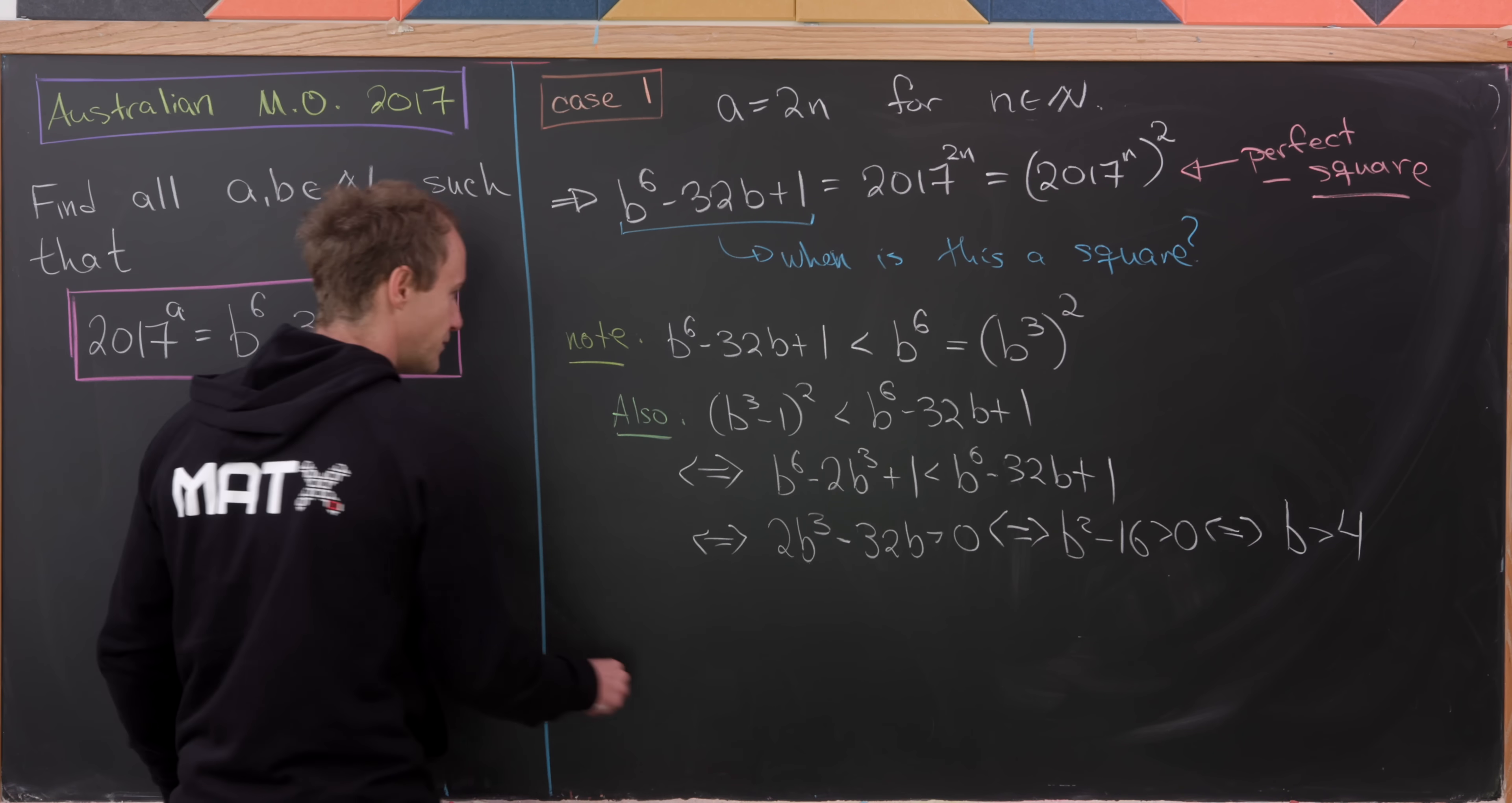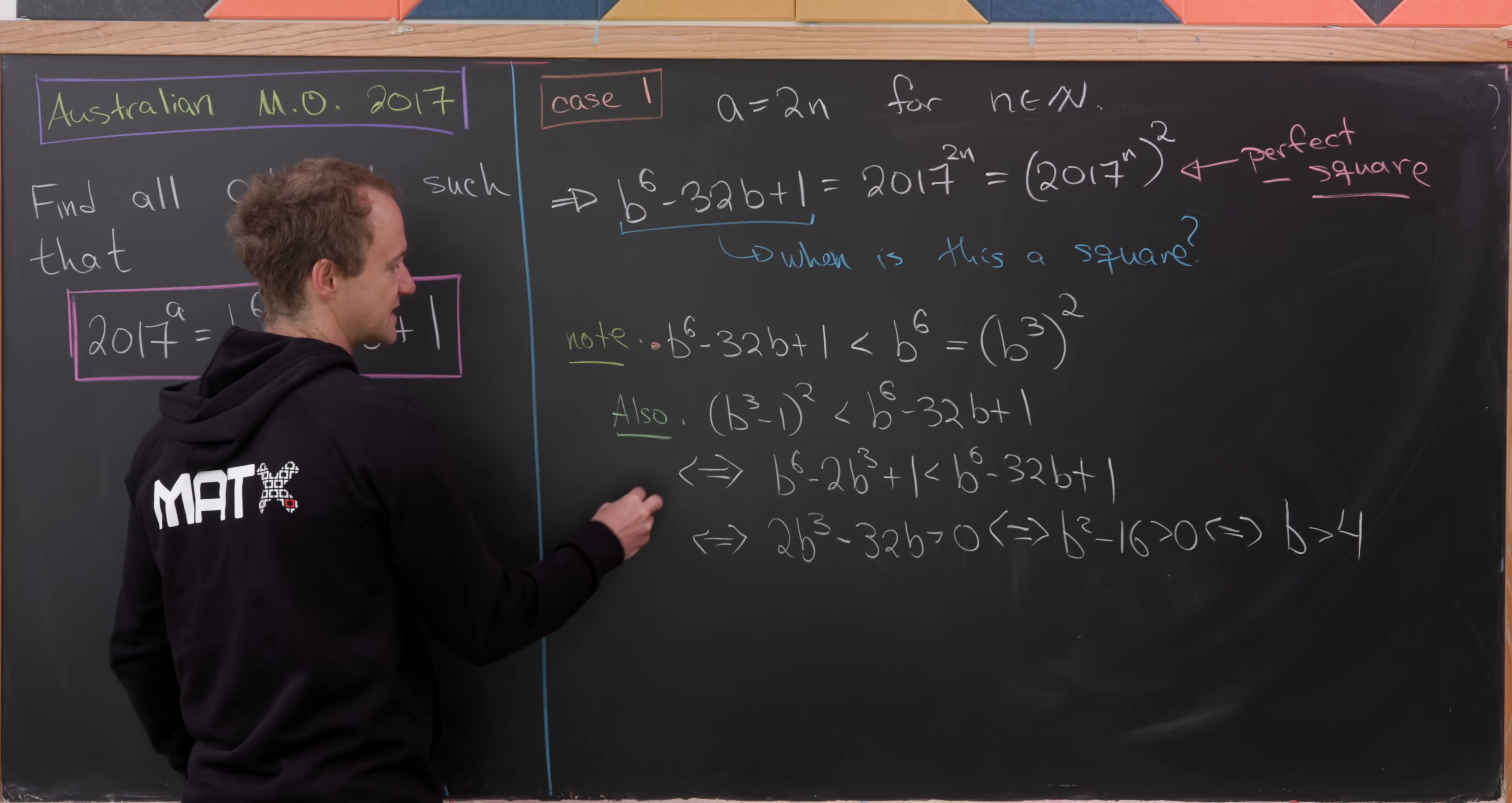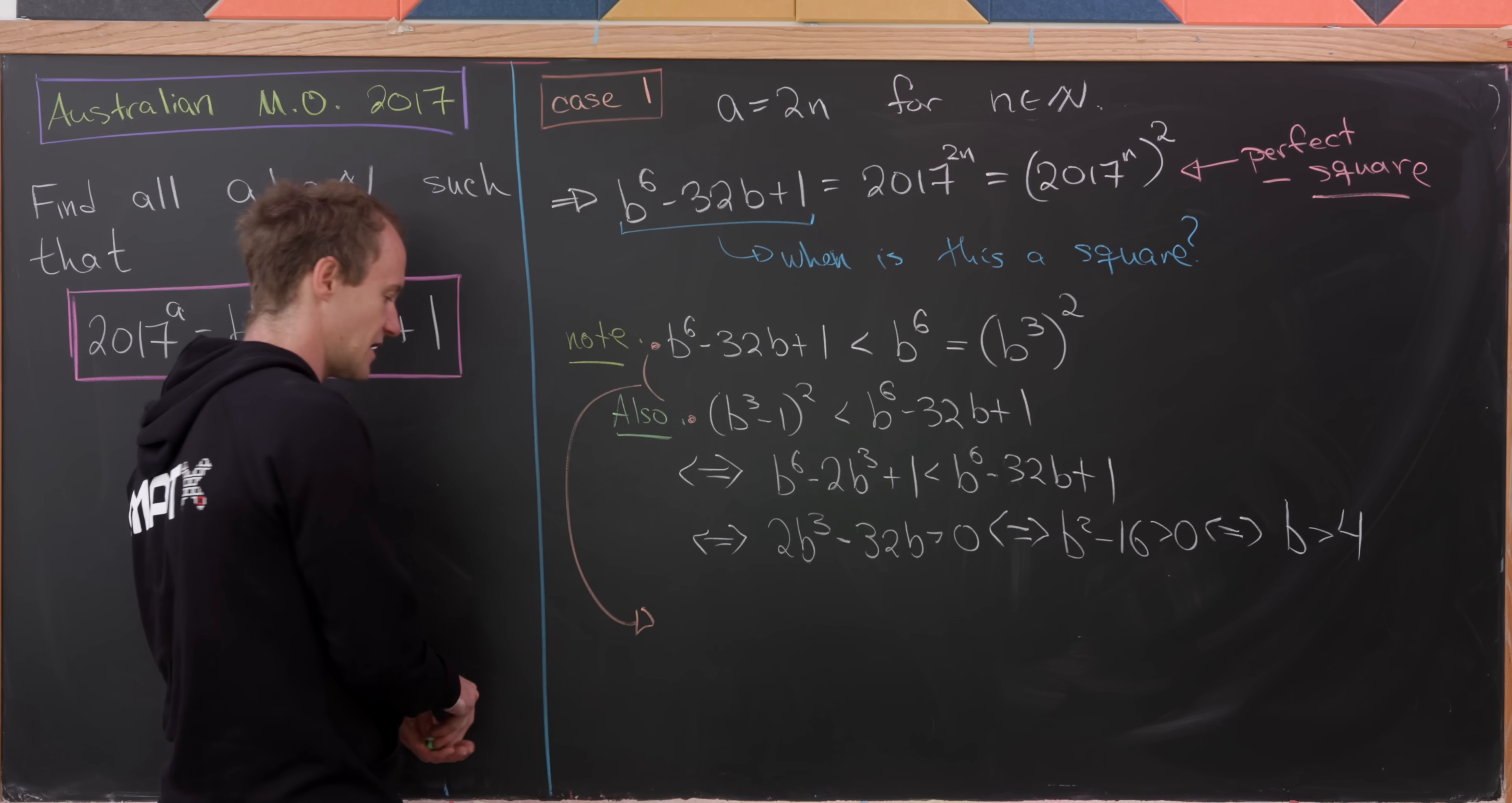which means that B needs to be bigger than 4. So now let's put these two facts together. So this thing right here and this thing right here.